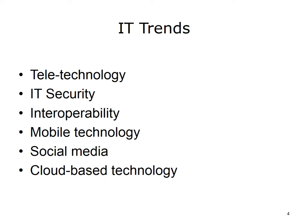AMIA defines interoperability as the ability for systems to exchange data and operate in a coordinated, seamless manner. Exchanging information and aggregating it with other data sources can be quite useful, but also very difficult without sound standards.